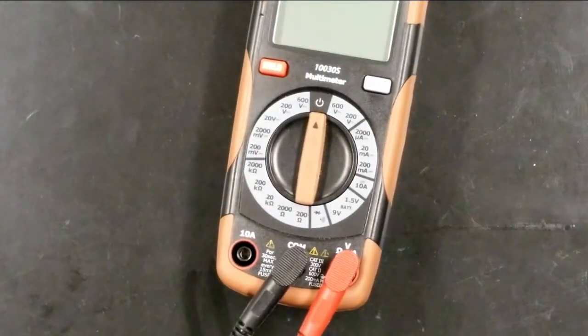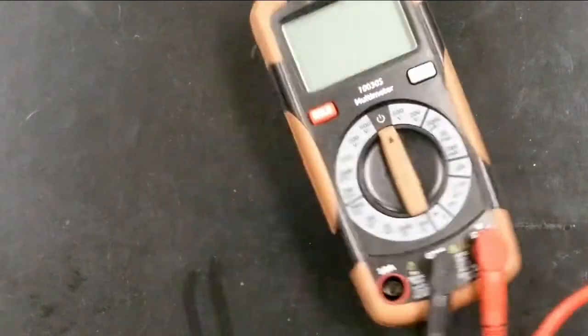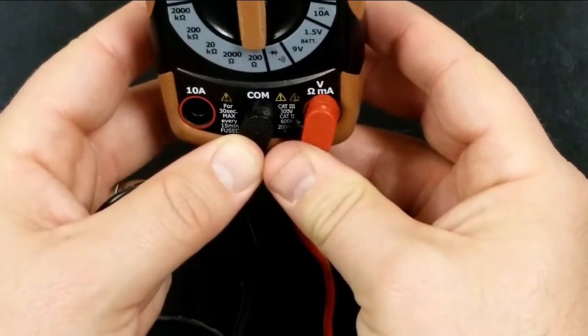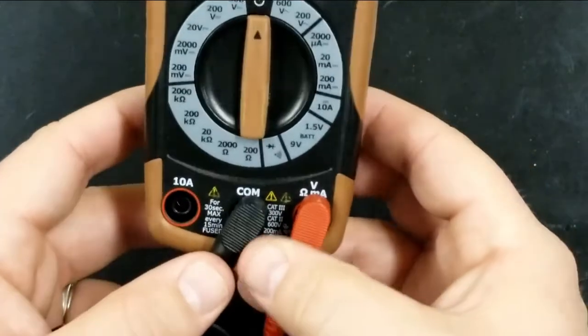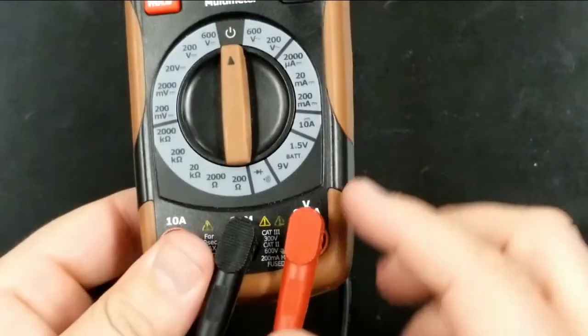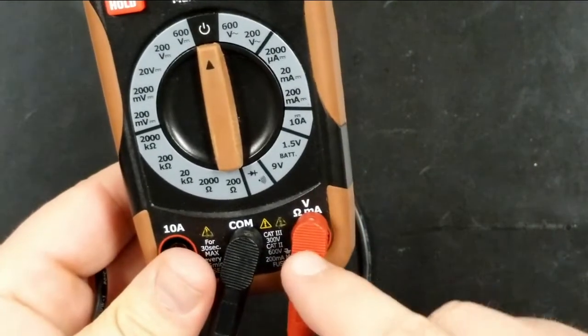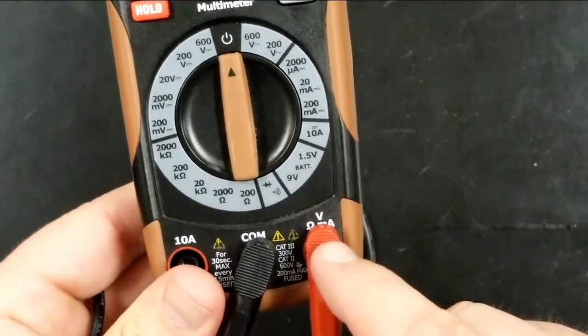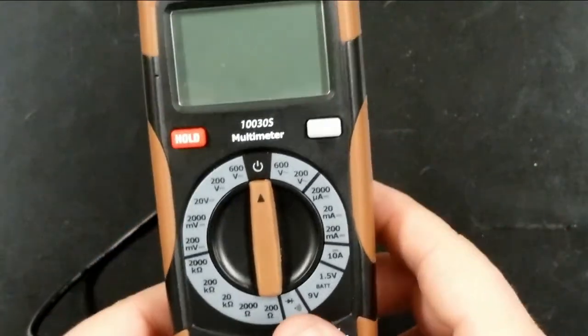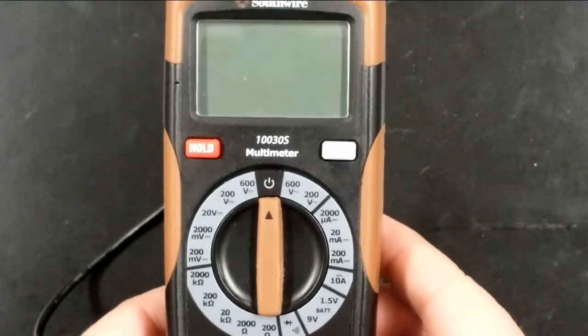First of all, this black wire should always be connected to the middle post on there that says COM, C for common, and so we're always going to plug this black wire into the common port right there. Most of the time, the red wire will be clipped into the right-hand post, where you see a V, V for voltage, at the top.